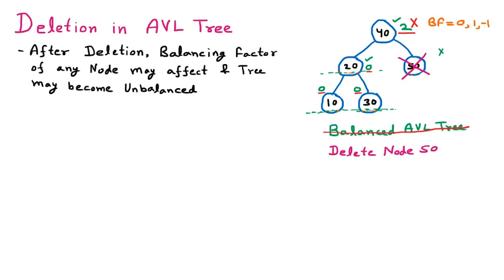This tree is now an unbalanced AVL after deletion of node 50. We deleted node 50, and the balancing factor of node 40 changed, causing the tree to become unbalanced. So we are going to perform certain rotations. Rotations are made on the unbalanced tree to restore the balanced tree.